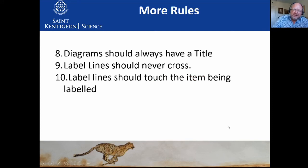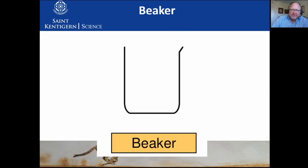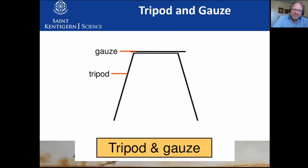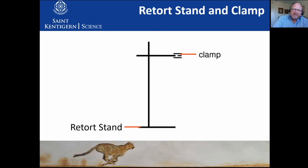Always include a title. This is how we draw a test tube. This is how we draw a beaker. A conical flask. A tripod and gauze — tri means three, so why don't we draw a third leg? When drawing a tripod, you only draw two legs. Some people want to draw a third leg in the middle, but that is actually wrong — only draw two legs of a tripod. This is a retort stand with a clamp at the top.